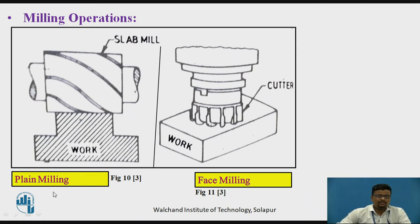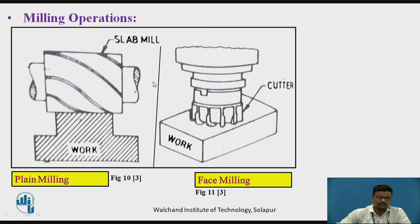The plain milling operation: suppose this is a workpiece and you want to provide a plain milling operation on it. The type of milling cutter used is called a slab mill. The feed movement of the workpiece is parallel to the axis of the slab milling cutter.